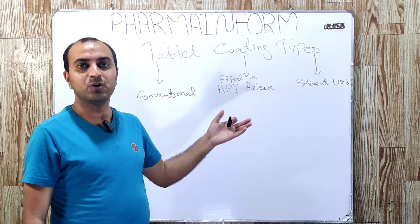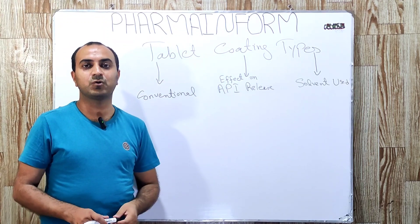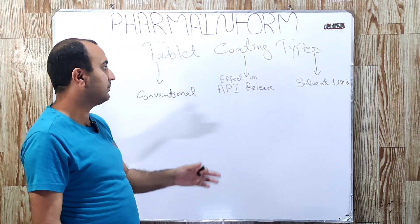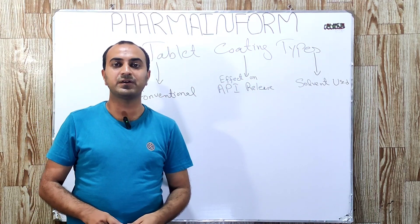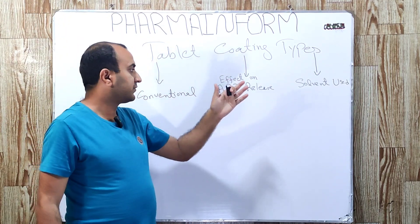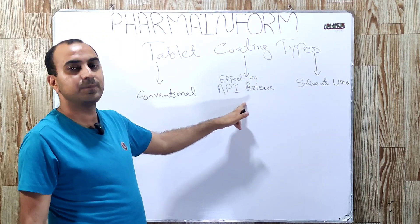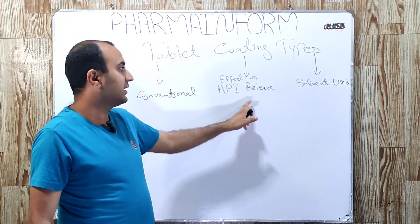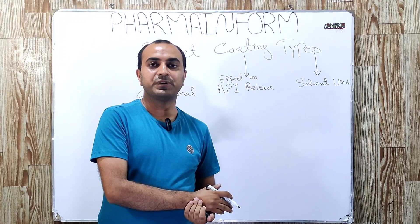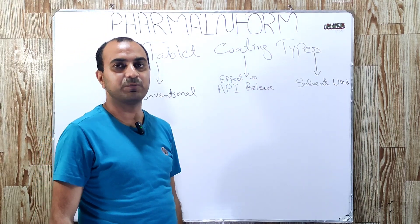By watching this video, you will learn something new regarding the types of tablet coating, because we can classify tablet coating on the basis of three factors: one is the conventional classification system, second is the classification on the basis of effect on the API release, and the third is the classification on the basis of solvent used for the tablet coating suspension preparation.